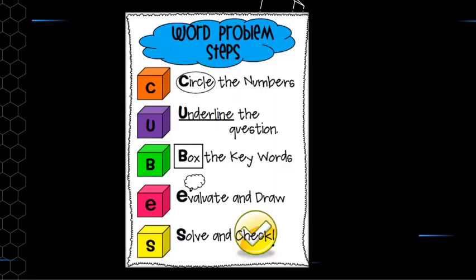Just a quick reminder of the CUBE strategy. C is circling the numbers so they're visible. U is underlining the question — what do I need to actually answer? B is boxing the keywords. Keywords like 'total' usually mean addition; 'left' usually means some subtraction has occurred. E is evaluate and draw — maybe draw the problem and think about what operation you need. And lastly, S is solve it and check it.